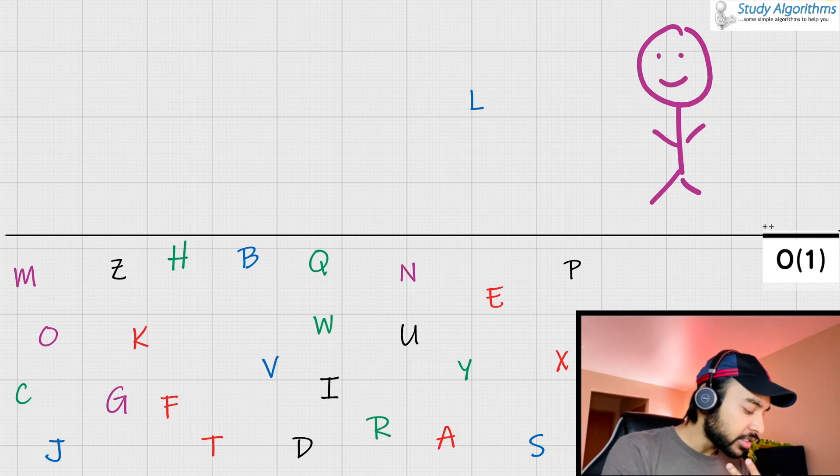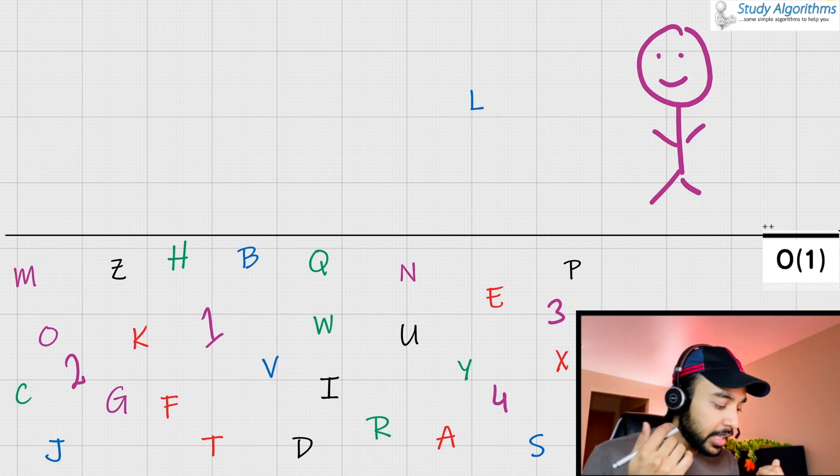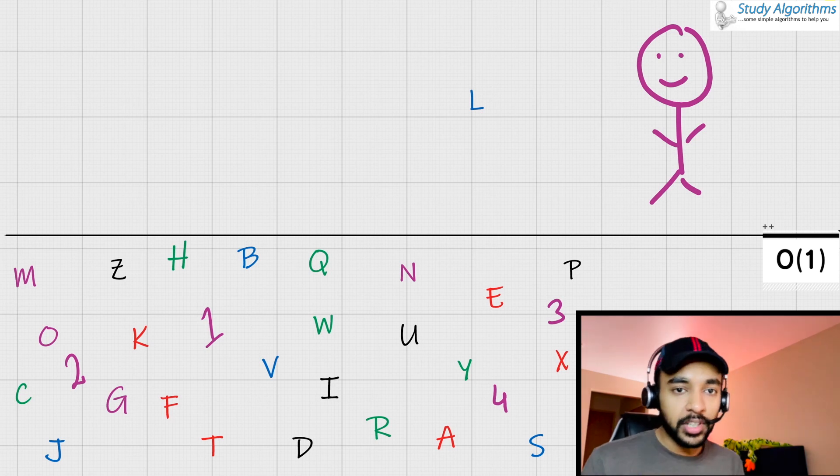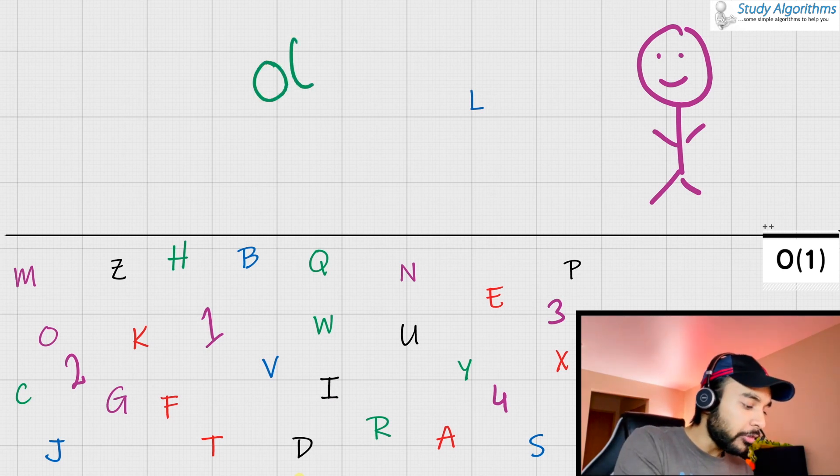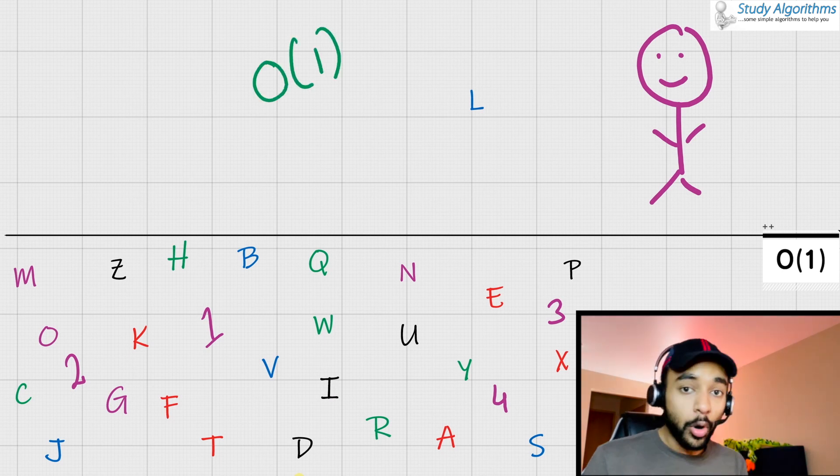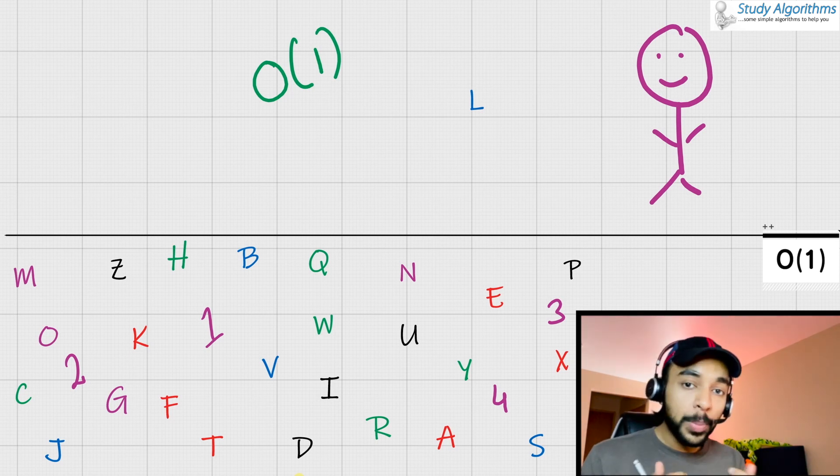But even if I add more characters to it, suppose I add the number one, then two, then three, then four. And I again ask you to go and pick up any random character. Then no matter how many characters there are on the floor, you can go ahead and pick up just one character. That means that the choice you are making is independent of the number of characters there on the floor. And this means a time complexity of one or you can say order of one or big O of one, because no matter how many characters there in the space, you are just taking the same amount of time to pick up a character.